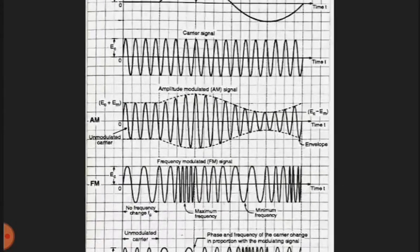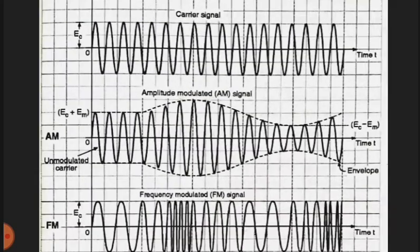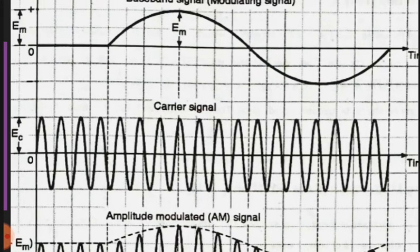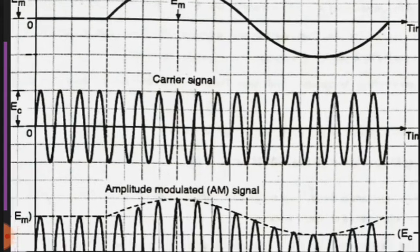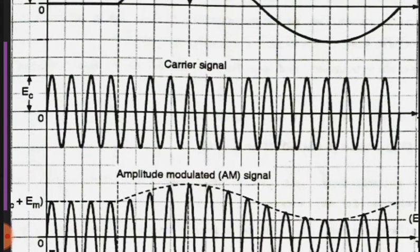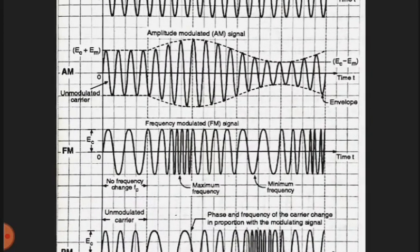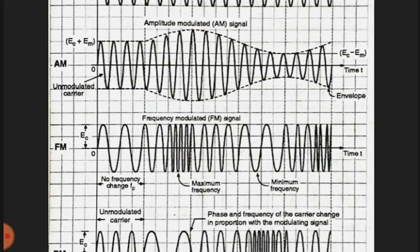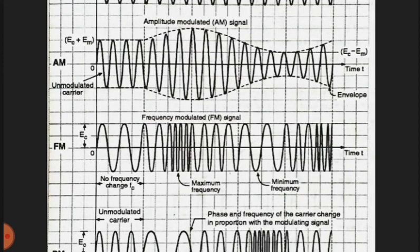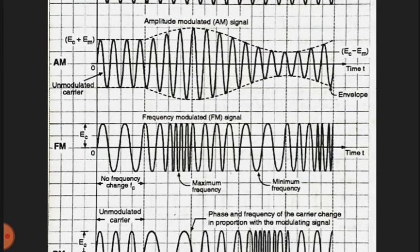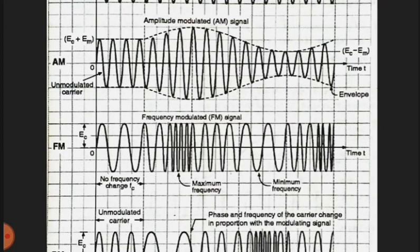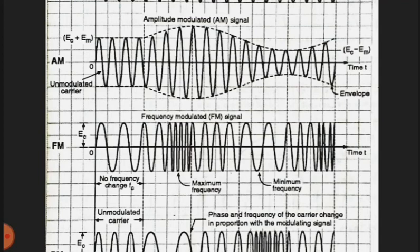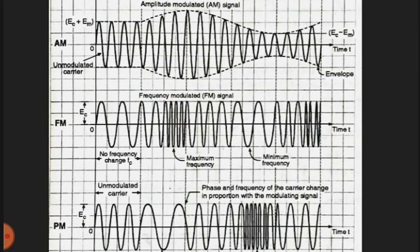Now let's look at the waveforms. The first is the AM signal, second is the carrier signal, and third is the amplitude modulated signal. For FM, the difference is: first unmodulated carrier, then maximum frequency change, no change, and minimum frequency change. Last is phase modulation.